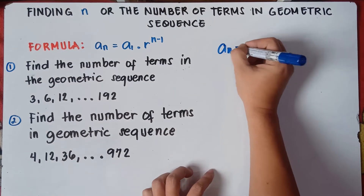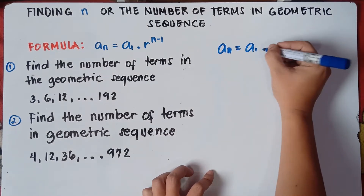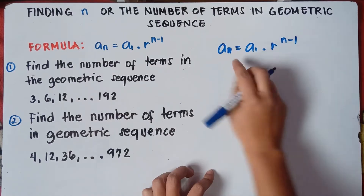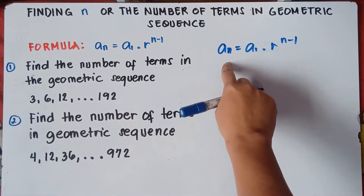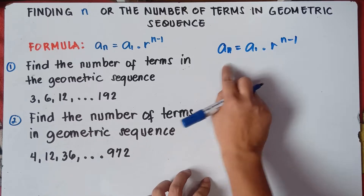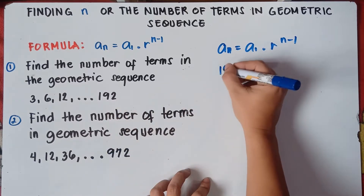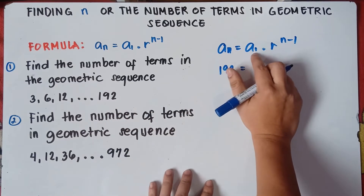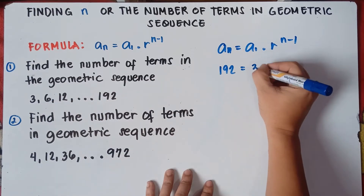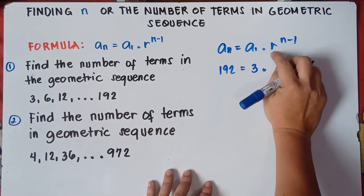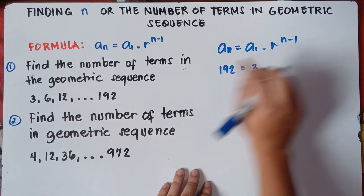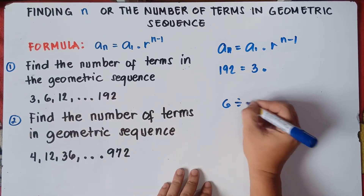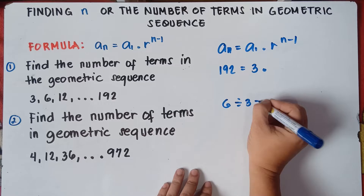So let's write the formula: a sub n equals the first term times r raised to the power of n minus 1. A sub n is the last term, and the last term is 192. The first term is 3. To get the common ratio, simply divide the second term by the first term. So 6 divided by 3, that is 2.